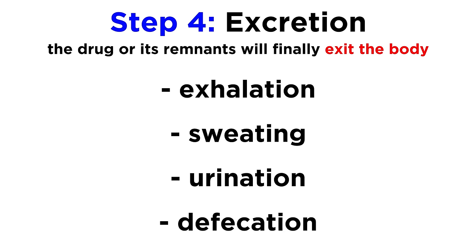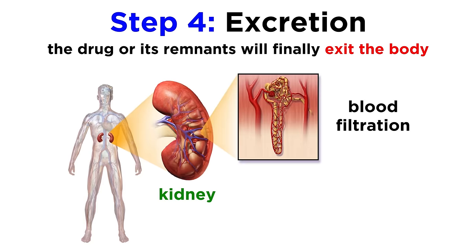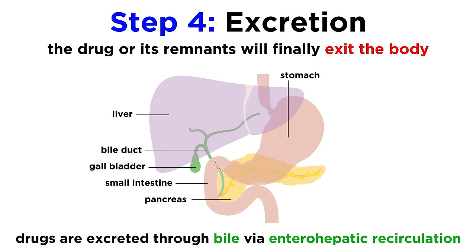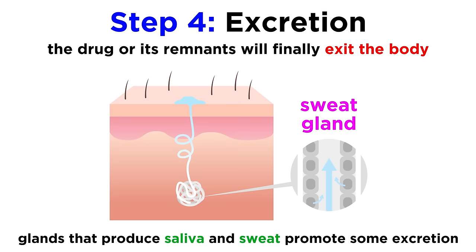Finally, after metabolization there is excretion, where the drug or its remnants exit the body. This is typically done via exhalation, sweating, urination, or defecation. The kidneys are heavily involved in this process, as they must remove harmful substances from the bloodstream. Some drugs are metabolized into gaseous form, and are thus easily exhaled. Some drugs are excreted through bile, a substance secreted by the liver to aid in digestion, as bile is recirculated back to the liver via enterohepatic recirculation, whereby most of the drug can then be excreted by the kidneys, and the rest will exit in the form of feces. Glands that produce fluids such as saliva and sweat can also promote excretion, though this method tends to be less effective.